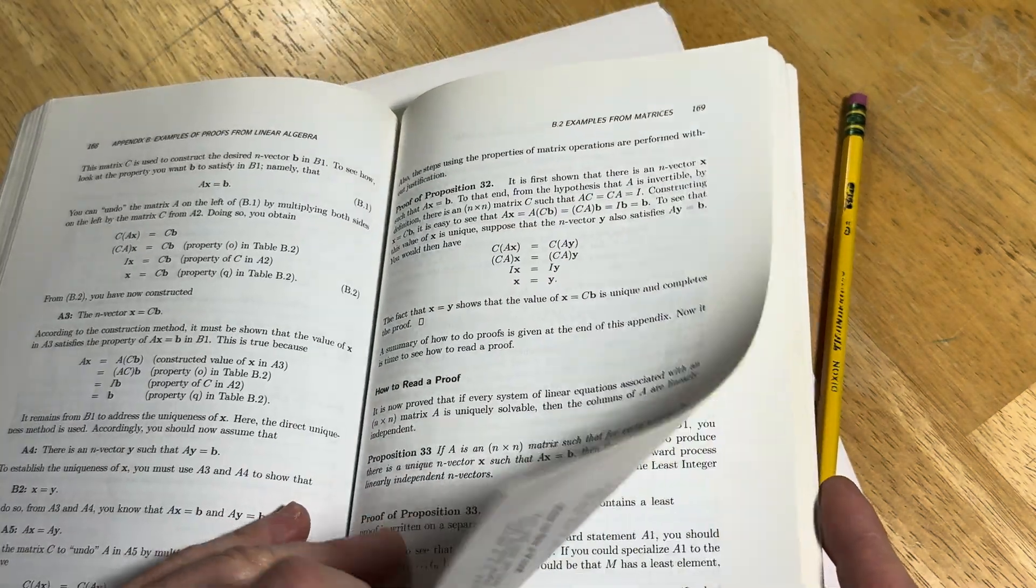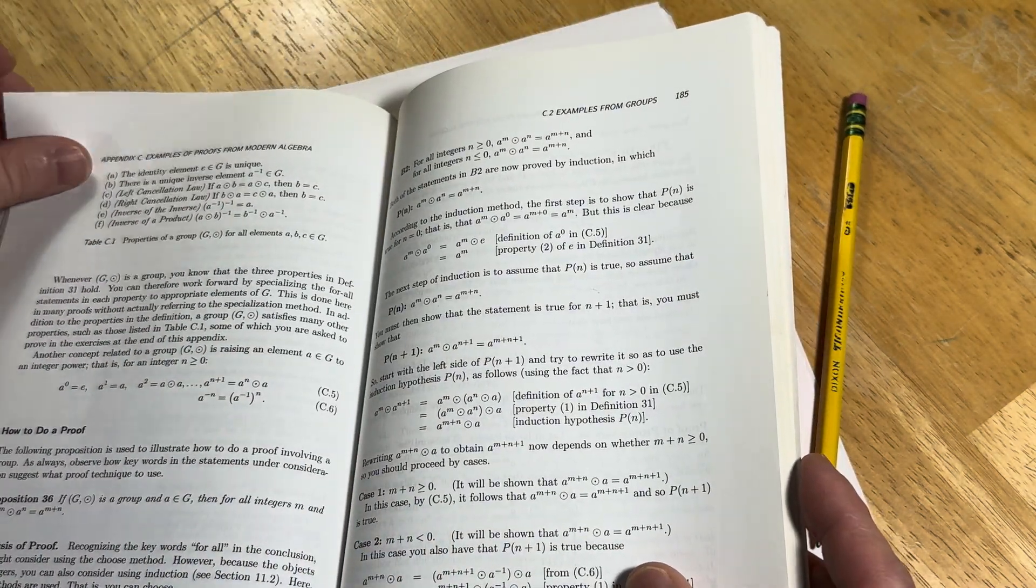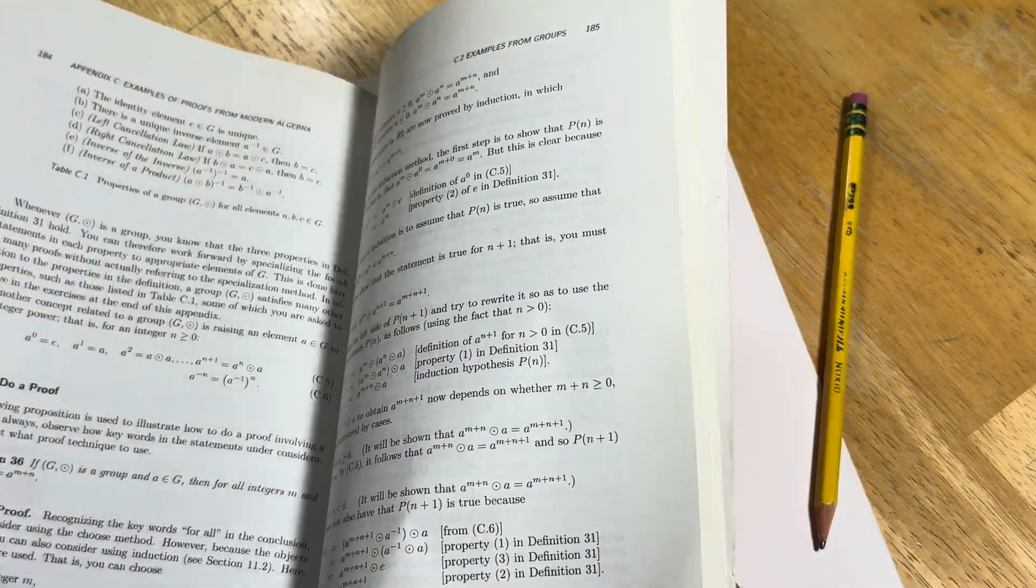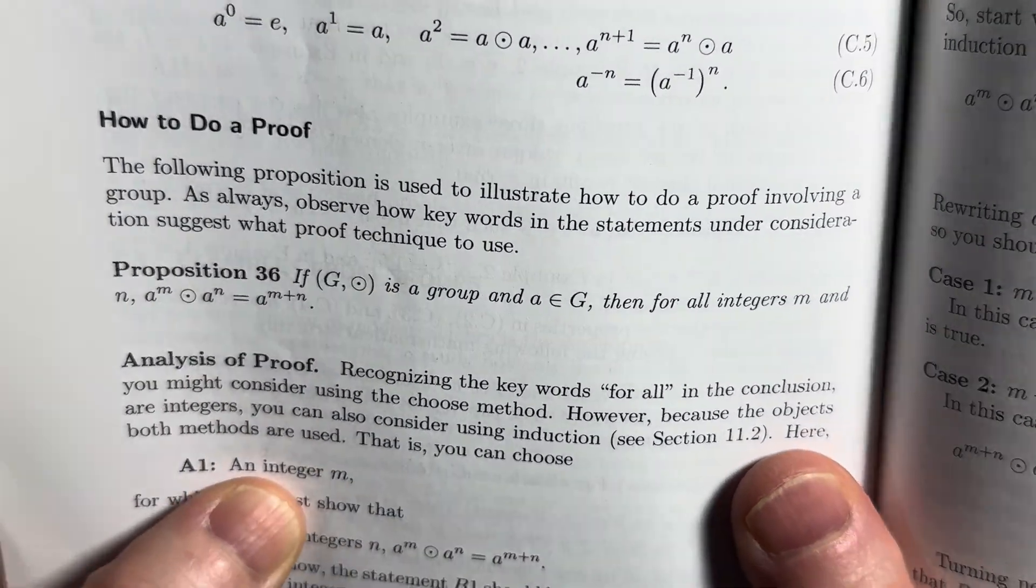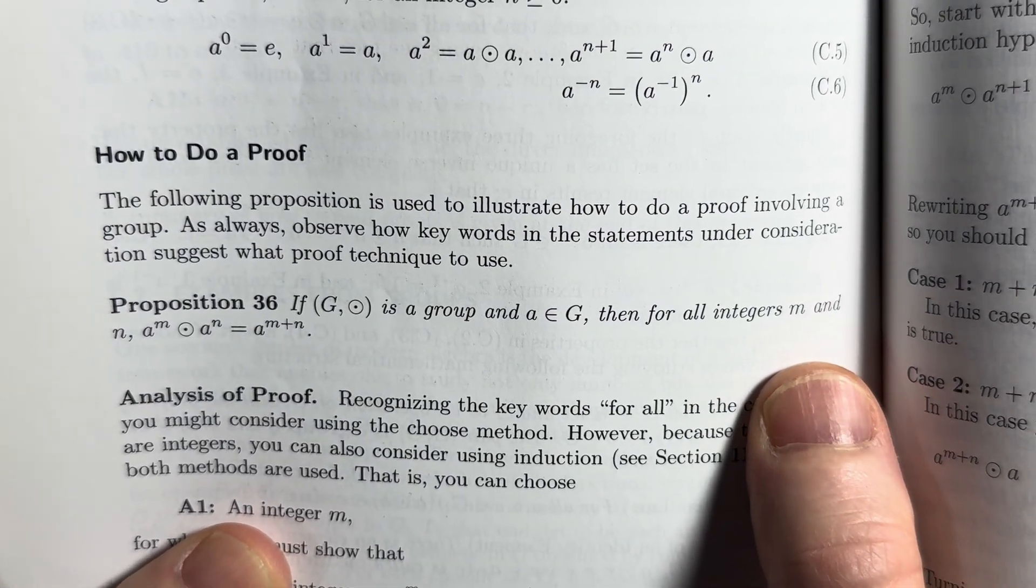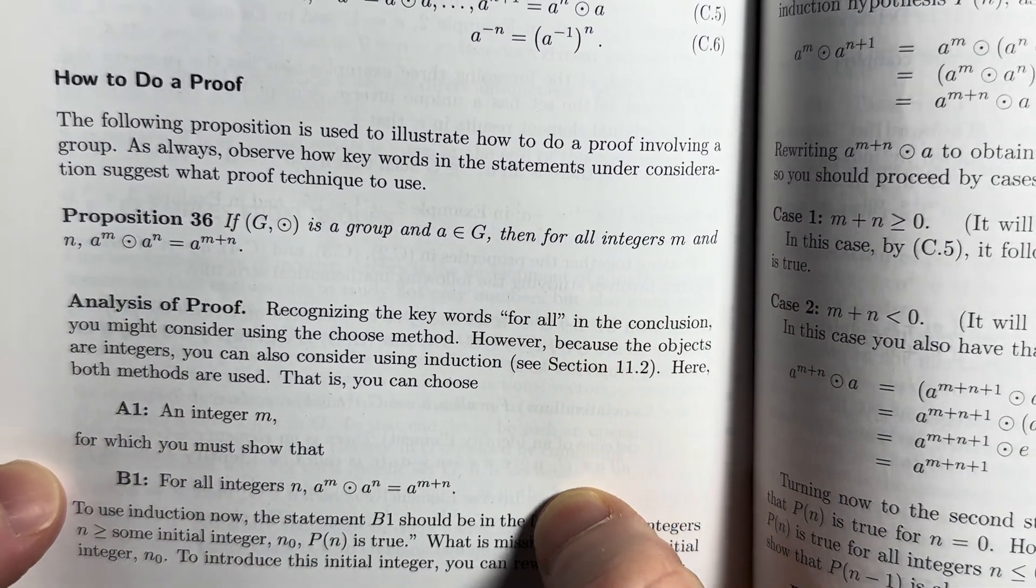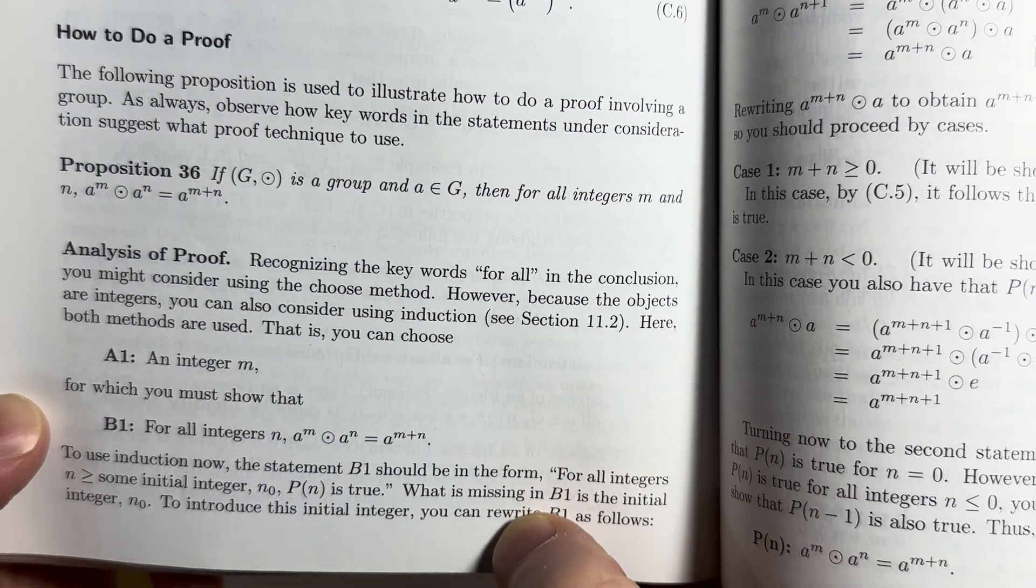Let's look at some of the proofs in the back here. Examples from groups. Here we go. What's this? Proposition 36. If G is a group and A is in G, then for all integers M and N, we have this here, properties of exponents. So, it's analysis of proofs.